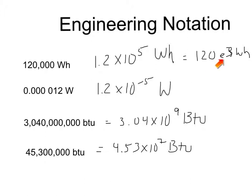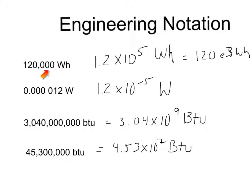You'll see this notation — the E notation — in literature, in some of my lectures and readings. It just means times 10 to the power shown. Your scientific calculator will also put numbers in this notation. So this means 120 times 10 to the third watt-hours. Once you use these numbers a lot, you'll get used to going right to engineering notation. With big numbers, the comma separates multiples of three — in this case, three zeros, so it's 120 times 10 to the third watt-hours.